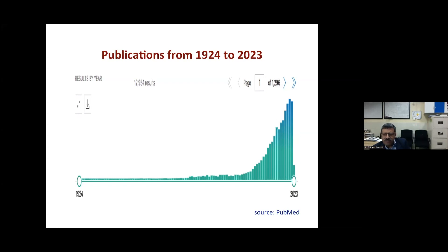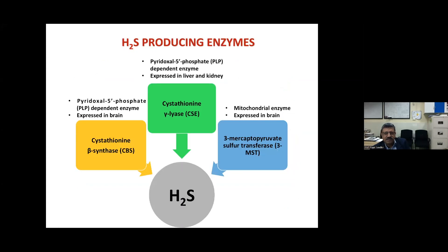The three key biosynthetic enzymes are: cystathionine gamma-lyase (CSE), cystathionine beta-synthase (CBS), and 3-mercaptopyruvate sulfurtransferase (3MST). The 3MST enzyme is present in mitochondria and highly expressed in the brain. Both 3MST and CSE are pyridoxal phosphate-dependent enzymes; however, CSE is predominantly present in liver and kidneys, while CBS is more prominent in brain — indicating different tissue-specific pathways.